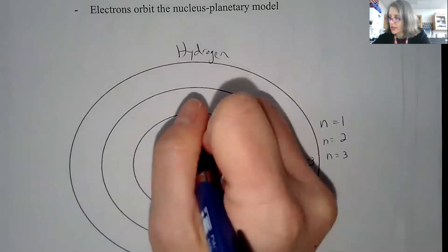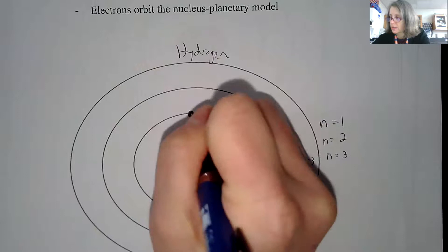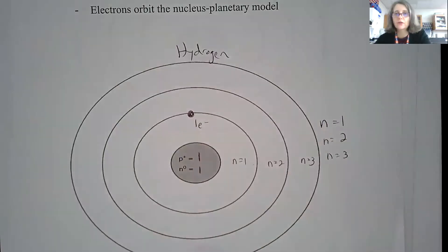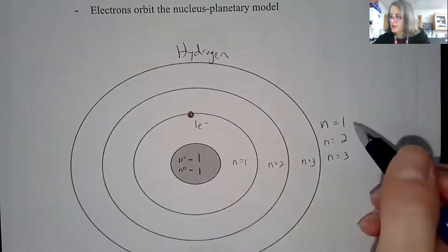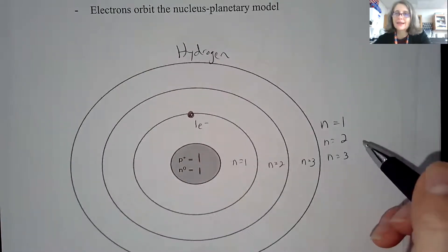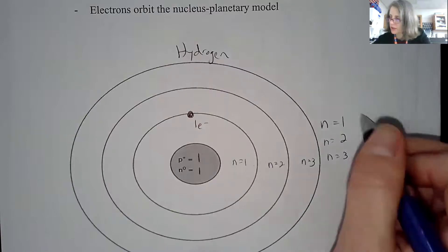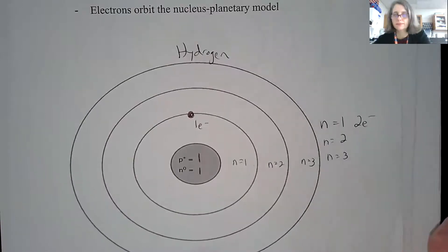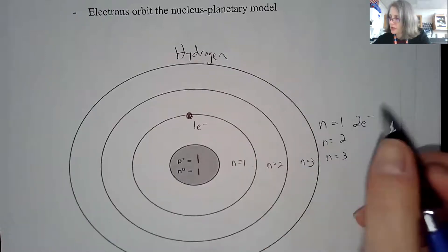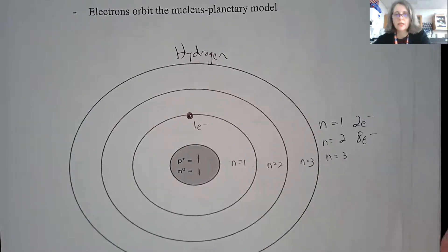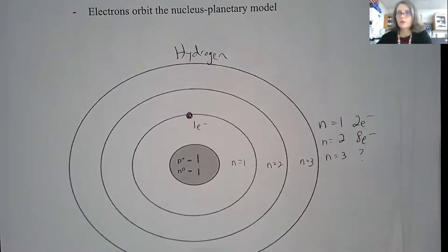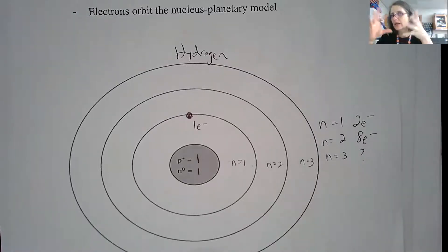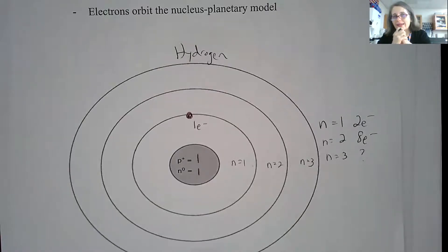Hydrogen has one electron, so I'm going to put one electron in the first energy level. There's a different amount of electrons that you can put in each energy level. Energy level one can have two electrons. Energy level two can have a total of eight electrons. The third energy level is something we'll discuss — we're going to get into why that is.